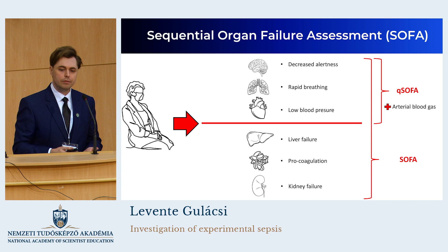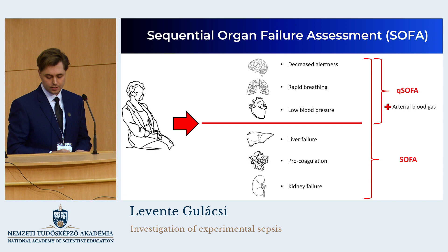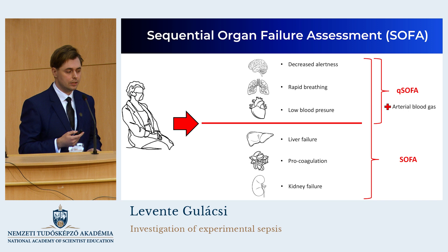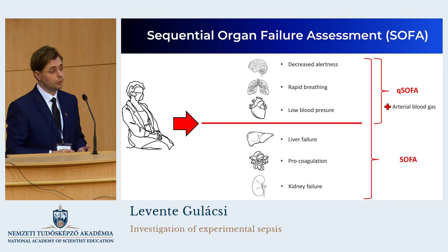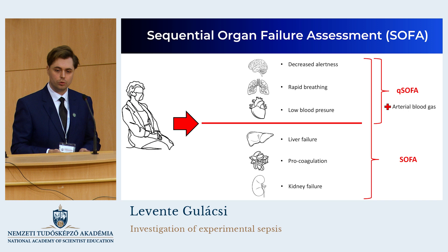There's an easy, quick way to get information about your patient's condition, and this is called the Sequential Organ Failure Assessment, also known as the SOFA scoring system. First you have to evaluate the consciousness of your patient, check his respiratory rate, and measure the blood pressure. These three parameters give you the quick SOFA score, where if the patient scores at least two in any combination and has a history of inflammation, you have to start the protocol I mentioned before.